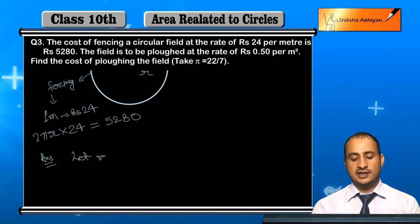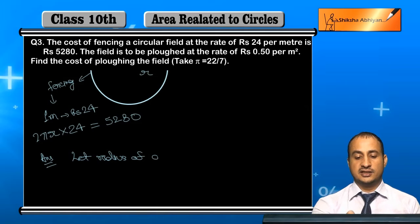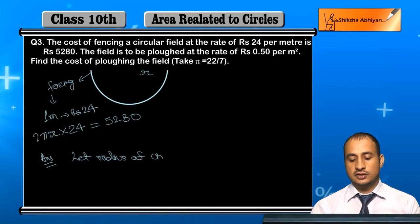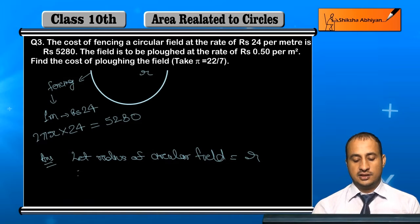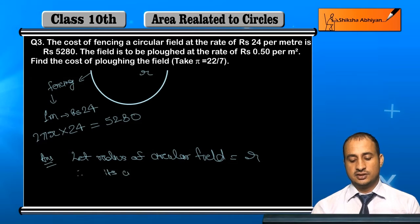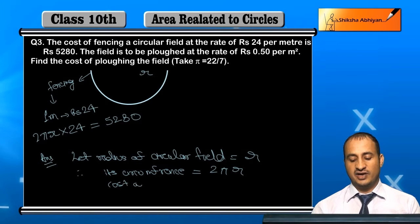Let the radius of the circular field be equal to r. Therefore its circumference is 2πr.